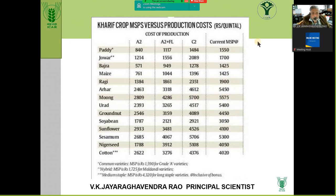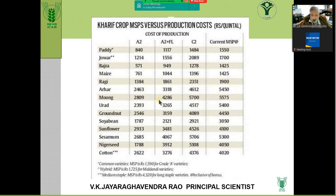Look at the cost of production versus current MSP: paddy is very marginal. Jowar is very unprofitable — the cost of cultivation is more than the current MSP offered, showing a negative trend. Bajra is better — recently I organized 500 farmers in an FPO to grow iron-fortified bajra, which fetches a premium price. Ragi and maize also show not much margin. Moong dal has a cost of about 5,700 but the current MSP is only 5,560, so growing moong dal results in a loss.